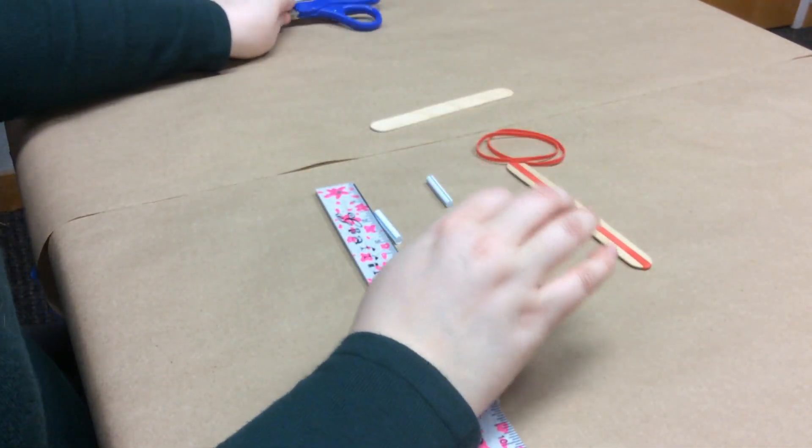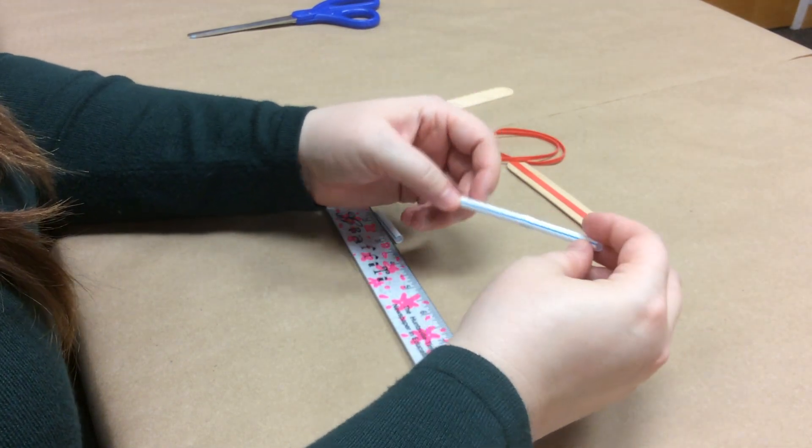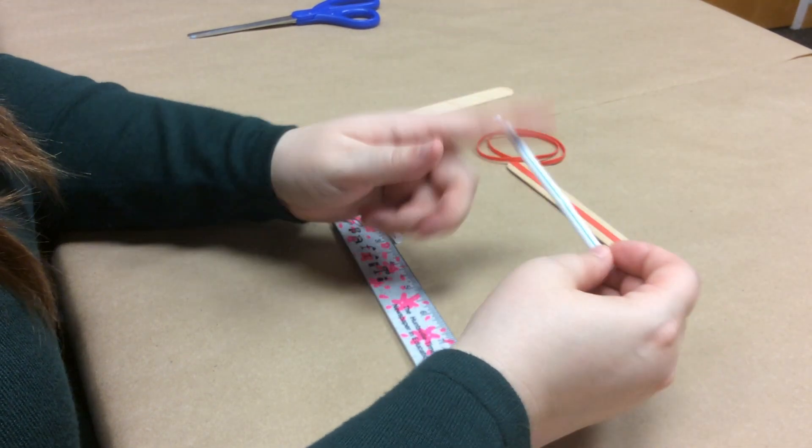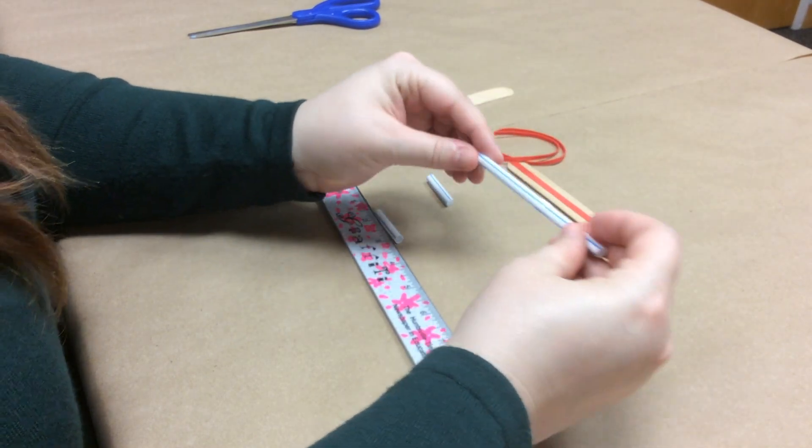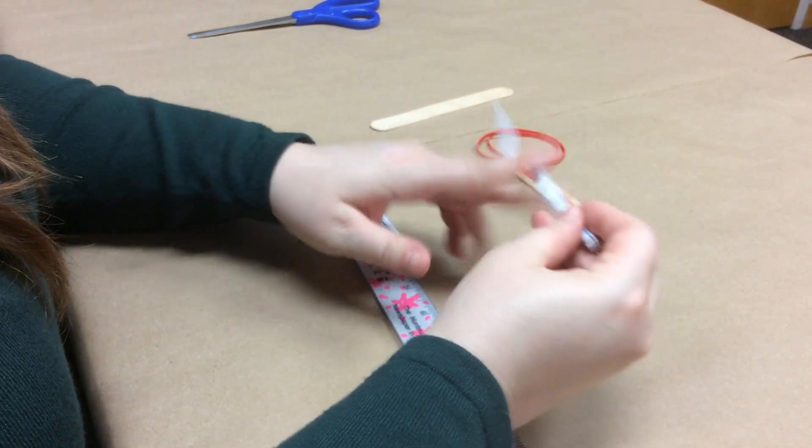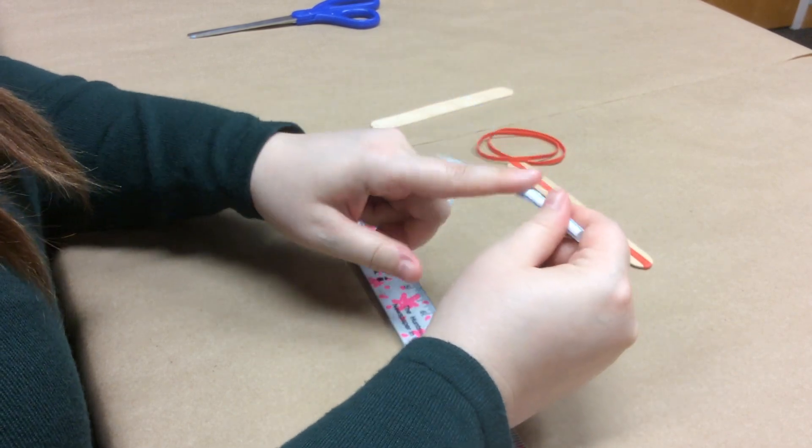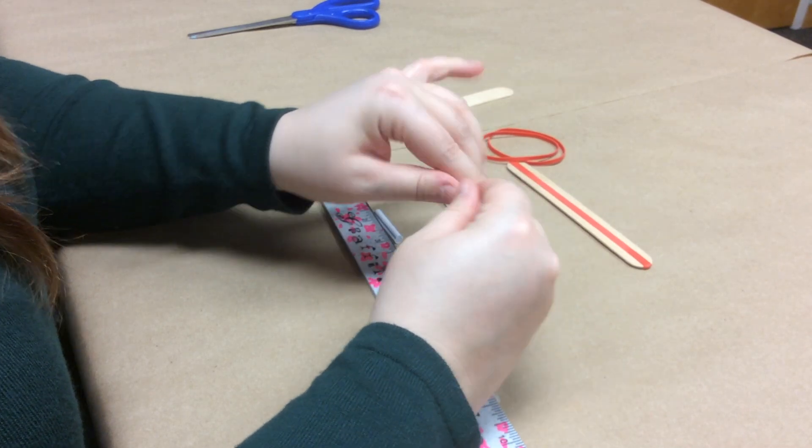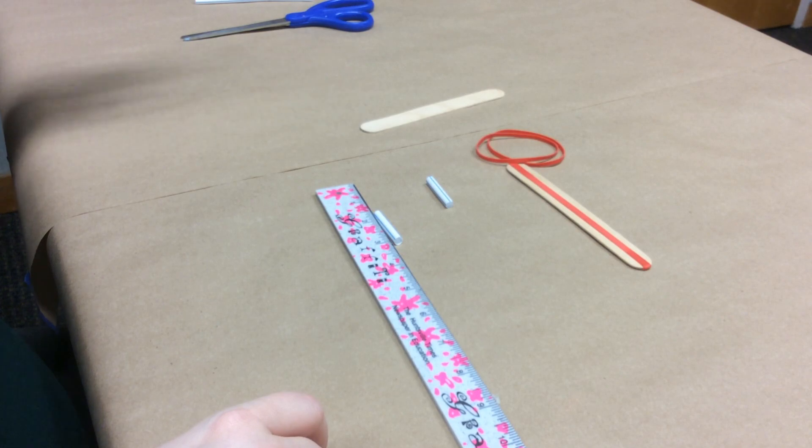So the rest of the straw you don't need, you can save it, you can use it to make another one of these. If you and a friend are making it, you guys only need one straw, you will need two of everything else, but you will only need one straw, because you can get at least two more of those out of the straw. You do not want to cut on the bendy part. The bendy part is no good to us, so don't use the bendy part, but otherwise you can get a couple more pieces out of that straw, so don't just throw it away.